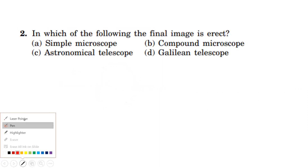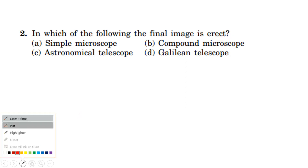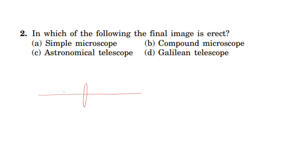Next question: in which of the following is the final image erected? In a simple microscope, the principal axis is focused and the object is placed between the principal focus and the optical center. The light rays will diverge, and the light rays appear to diverge from a certain point, forming an erect image. If it is a simple microscope, the image is erect. If it is a Galilean telescope, the image is also erect.